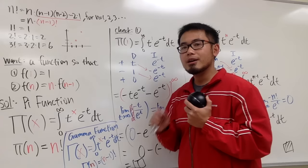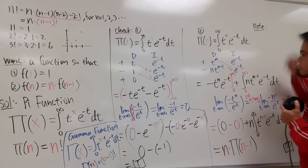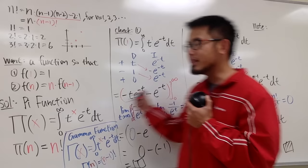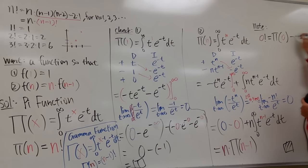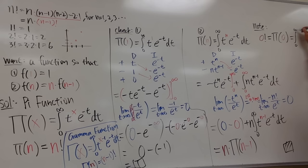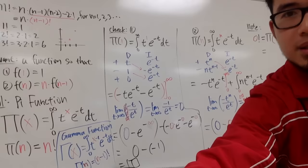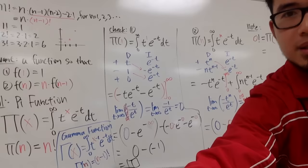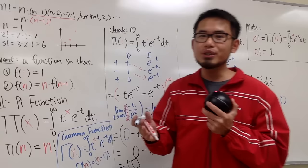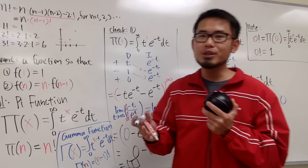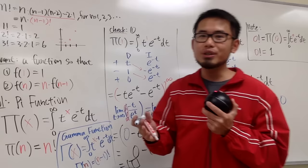As a bonus, notice that if you want 0 factorial, you just plug in 0 into the pi function. So 0 factorial equals Pi(0), which is the integral from 0 to infinity of t to the 0 power times e to the negative t, dt. I'll leave that to you — you work it out and you end up with 1. You can also watch the next video where I show fractional factorials such as half factorial and things like that.